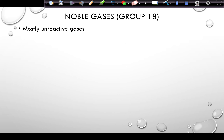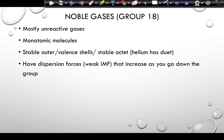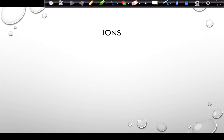Noble gases are the elements in group 18: helium, neon, argon, krypton, xenon, radon, and the newly named element Og. They form monatomic molecules and have stable outer valence shells — a stable octet of eight valence electrons, except for helium which has a stable duet of two. They have weak dispersion forces between molecules, but boiling points increase going down the group as intermolecular forces increase. Helium has the lowest boiling point in group 18.